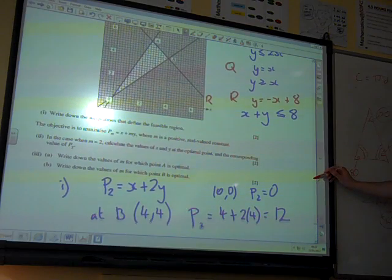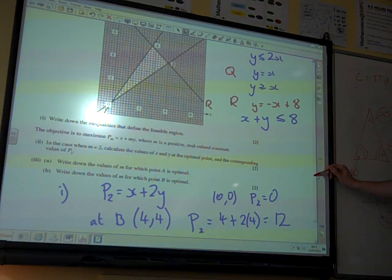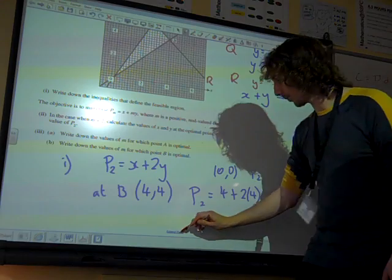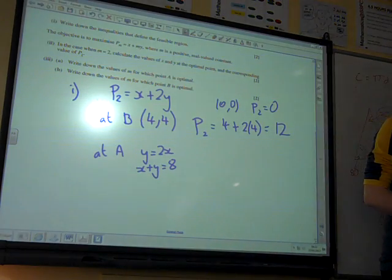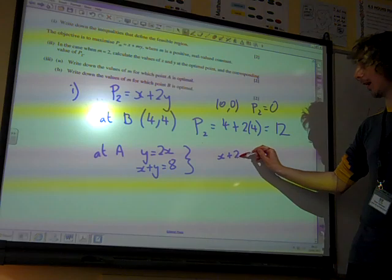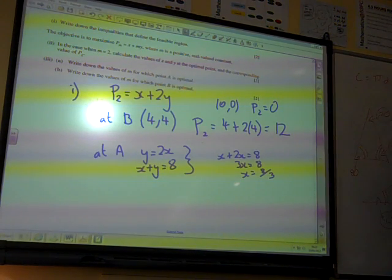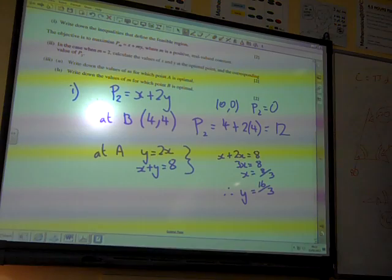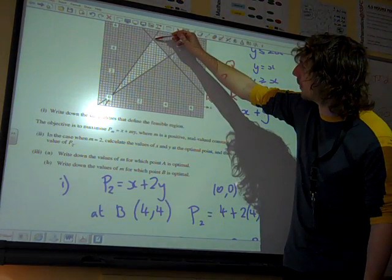The other point isn't quite as clear on our graph. I think we actually need to algebraically work out what this point is. It's the point where the line y equals 2x meets the line x plus y equals 8. That's simultaneous equations. We can combine these and say that x plus 2x is 8. 3x is 8, so x is 8 thirds. If x is 8 thirds, y is twice x, y is 16 thirds. Does that look right? Just less than 3 and just more than 5. That's about right.